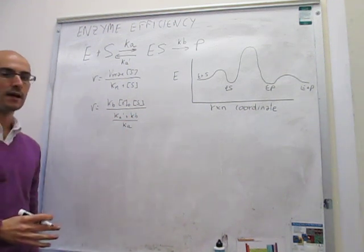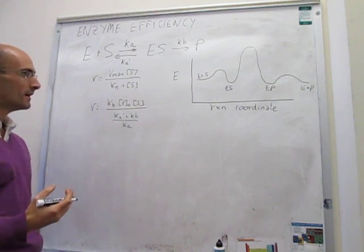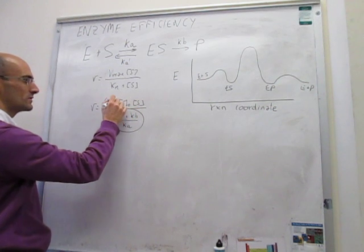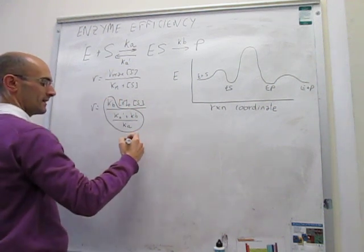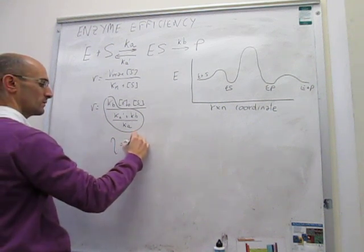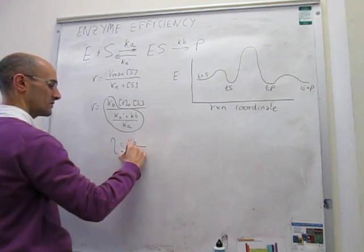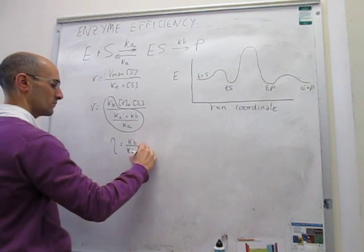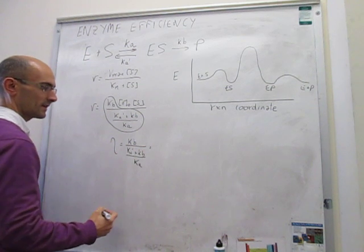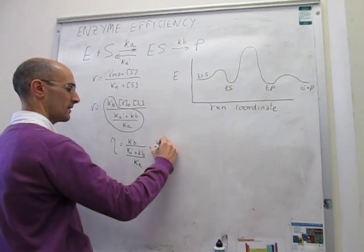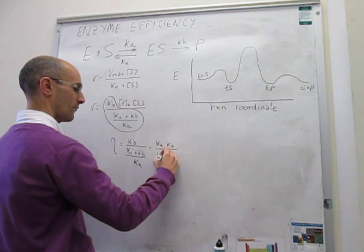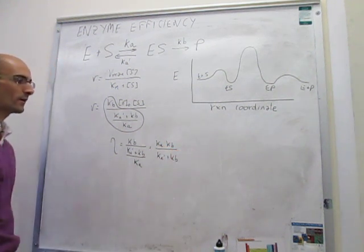Now, enzyme efficiency is determined by this. That's what we call enzyme efficiency, and that has the Greek letter eta equal to k sub b over k sub a prime plus k sub b, over k sub a, which is exactly the same as k sub a, k sub b over k sub a prime plus k sub b.